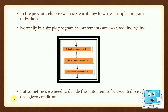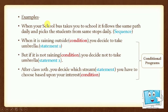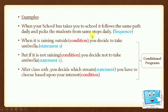Sometimes we have to decide which statement we will execute based on a given condition. For example, when your school bus takes you to school, it follows the same path daily and picks students from the same stops daily. So daily the bus is following the same path — you can say it is an example of a sequence. When you have step-by-step execution, it is your sequential program.